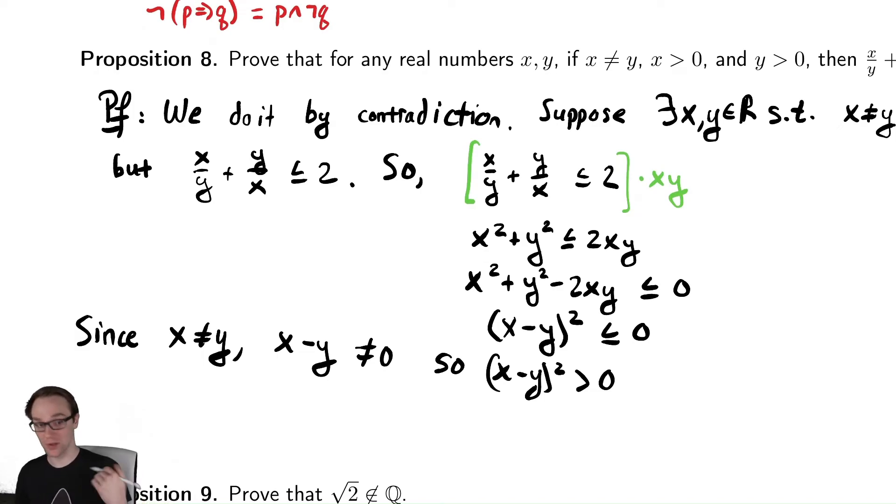Something's got to be wrong here. The thing that's wrong was our initial hypothesis. Every step that we took was justified. The only thing here that was unjustified was the original hypothesis, that we assumed that the hypotheses were true, but the conclusion was false. So as a result of that, we know that the thing we started with must be true, because we led to a contradiction, something that cannot possibly be true.